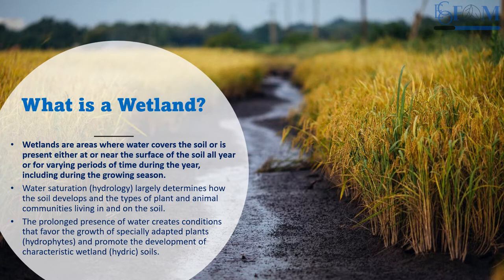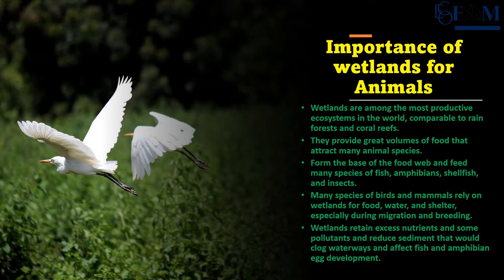Water saturation largely determines how the soil develops and the types of plants and animal communities that live in or on the soil in wetland areas. The prolonged presence of water creates conditions that favor the growth of specially adapted plants — hydrophytes — and promotes the development of characteristic wetland or hydric soils.